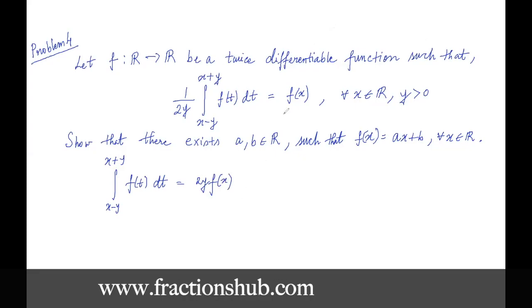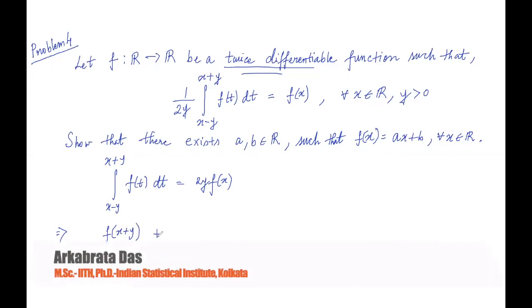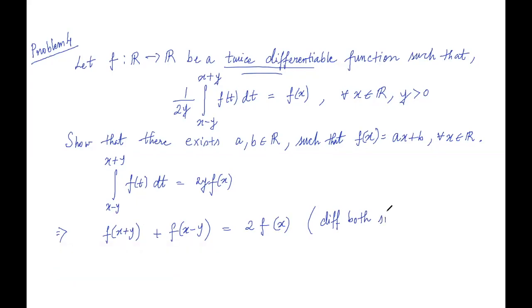Now you notice that you have been given that f is twice differentiable so let's use that. So let's differentiate both sides with respect to y. So you get that f of x plus y plus f of x minus y equals 2 f of x. So this is differentiating both sides with respect to y.